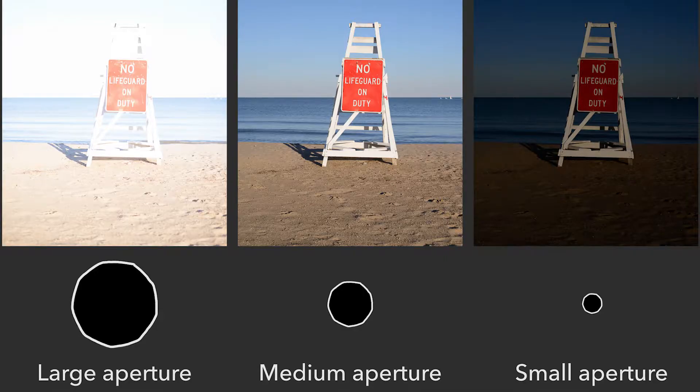It works just like a human eye. When you first walk outside after being inside, the light's really bright and you have to wait for your eyes to adjust. What you're waiting for is your eyes to close down a little bit so that not as much light is entering your eyes. So aperture is measured in what we call F-stops.